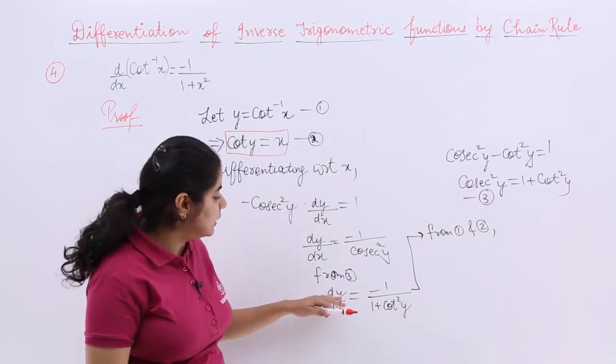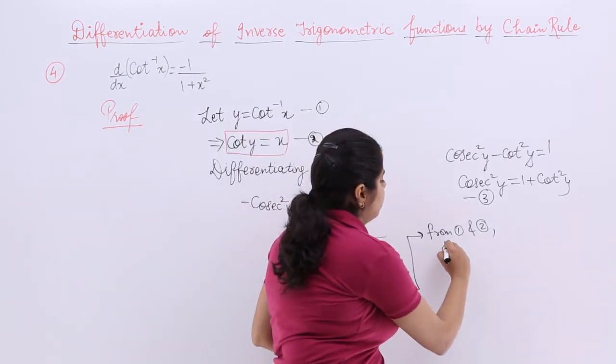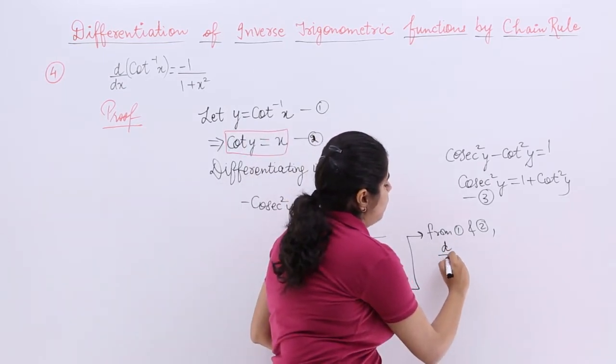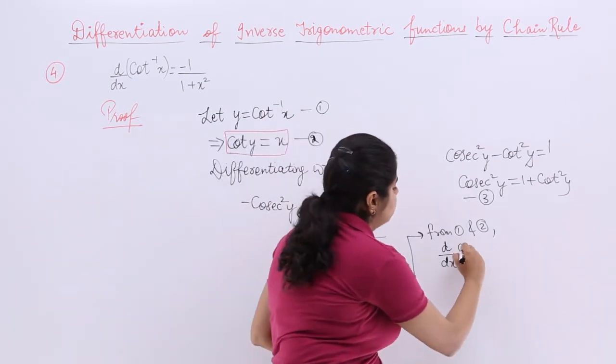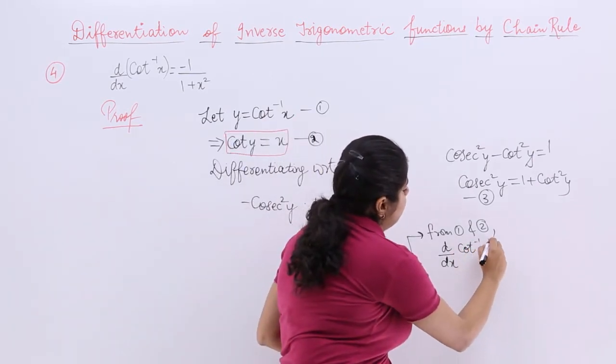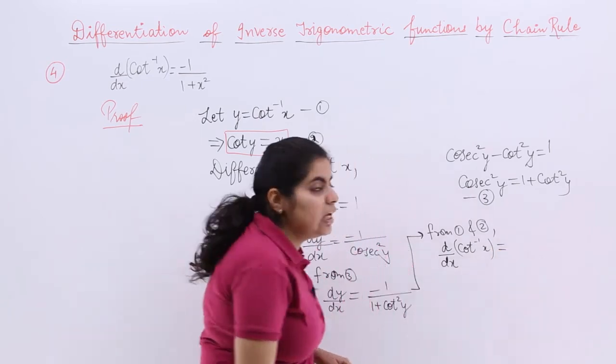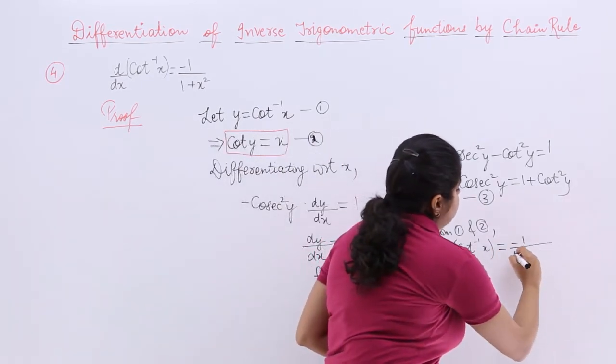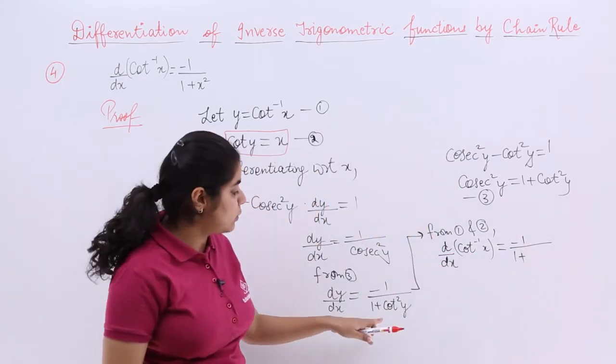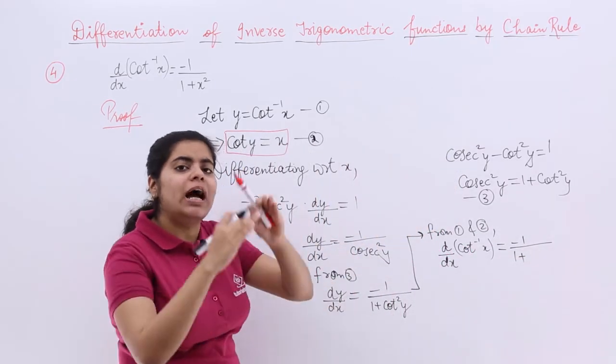From 1 and 2, I have something called as d/dx of y. Y is cot inverse x is equal to minus 1 upon 1 plus cot square y or cot y whole square.